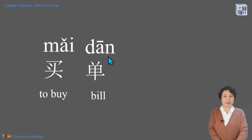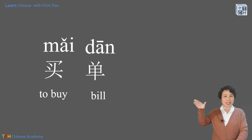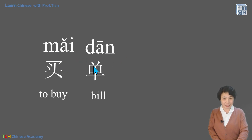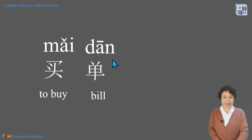And this 单 — look at the vowel, it's A-N, pronounced exactly like the English word 安. The first tone is flat, keep it flat. So 单. Together: 买单, 买单. Faster: 买单. Normal speed: 买单.